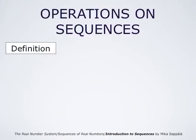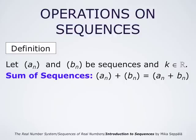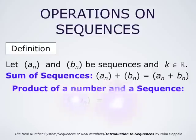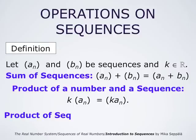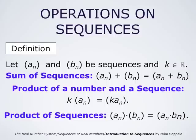One defines the following operations on sequences. If aₙ and bₙ are two sequences and k is a number, then the sum of the sequences aₙ + bₙ is the sequence consisting of numbers aₙ + bₙ. The product of a number and a sequence k × aₙ is the sequence consisting of numbers k × aₙ. Likewise, the product of two sequences aₙ × bₙ is the sequence consisting of numbers aₙ × bₙ.